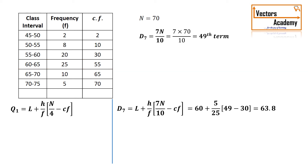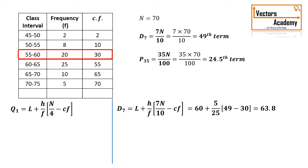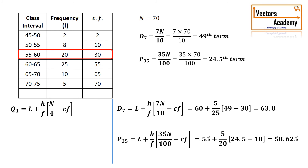In exactly the same way, to calculate the 35th percentile, the factor changes to 35n/100, because for percentiles we divide into 100 parts. So P35 corresponds to the 24.5th term, which falls in the third class. The formula for P35 is: l + (h/f) × (35n/100 − cf). As you can see, across all formulas — quartiles, deciles, and percentiles — only one factor changes depending on what we need to find.